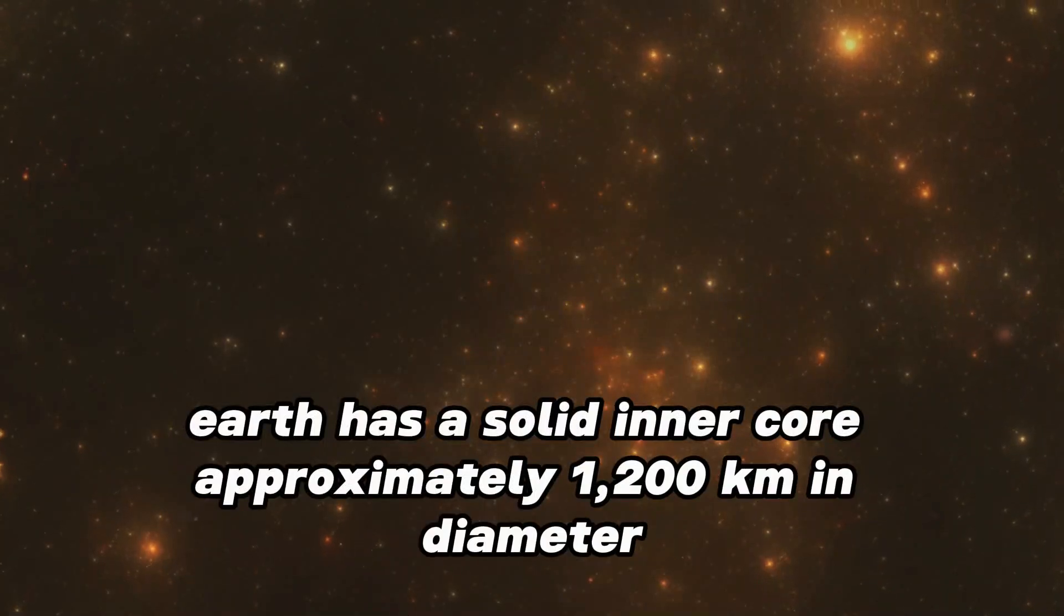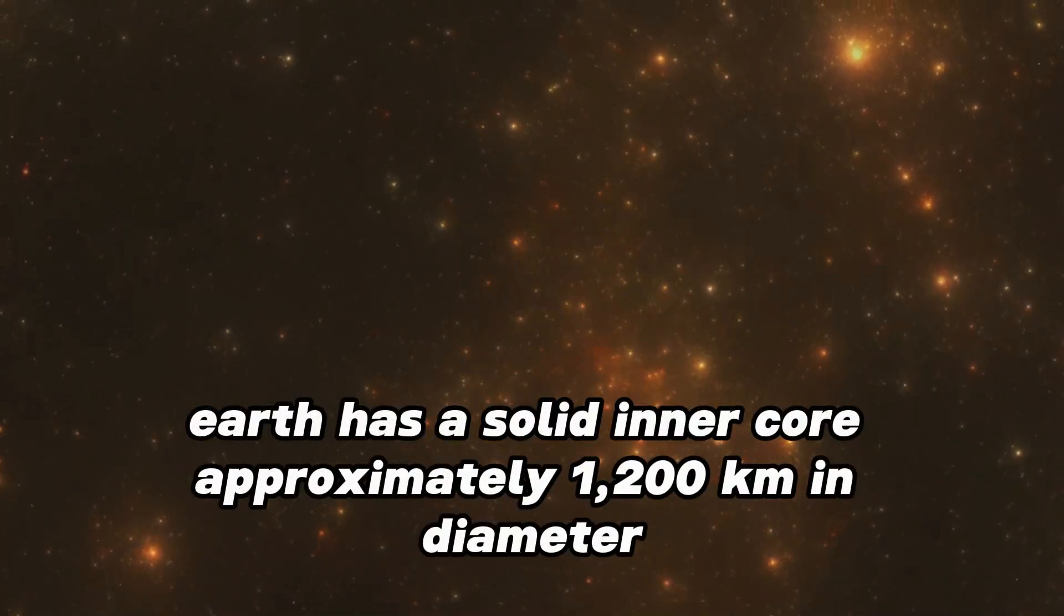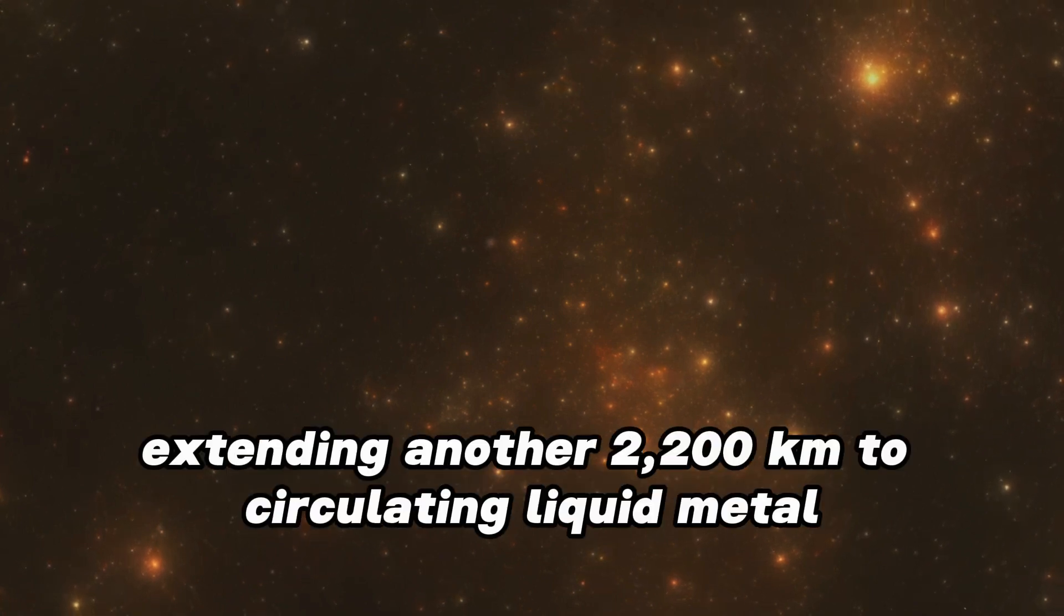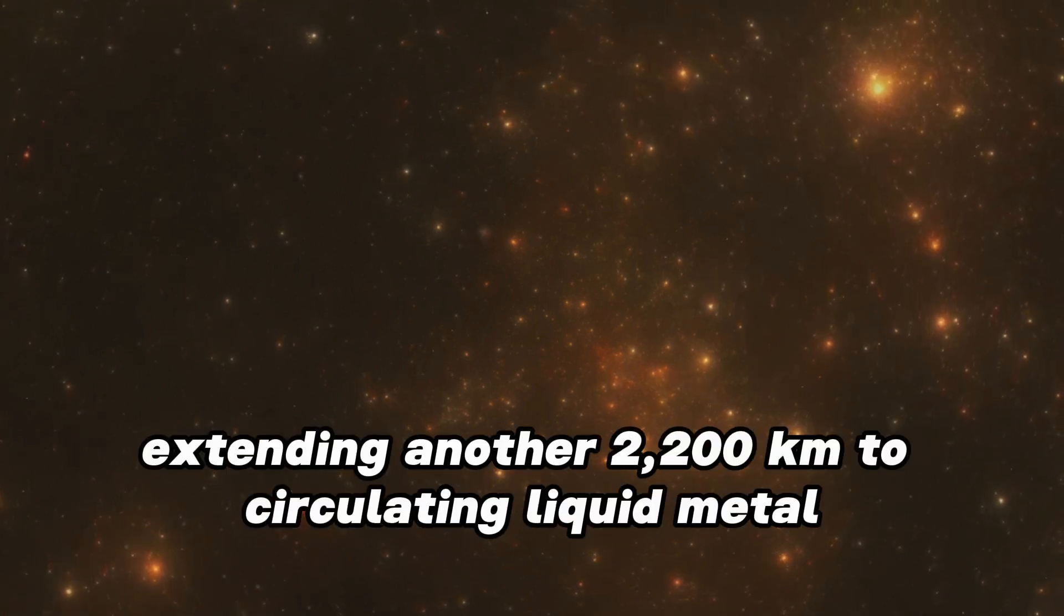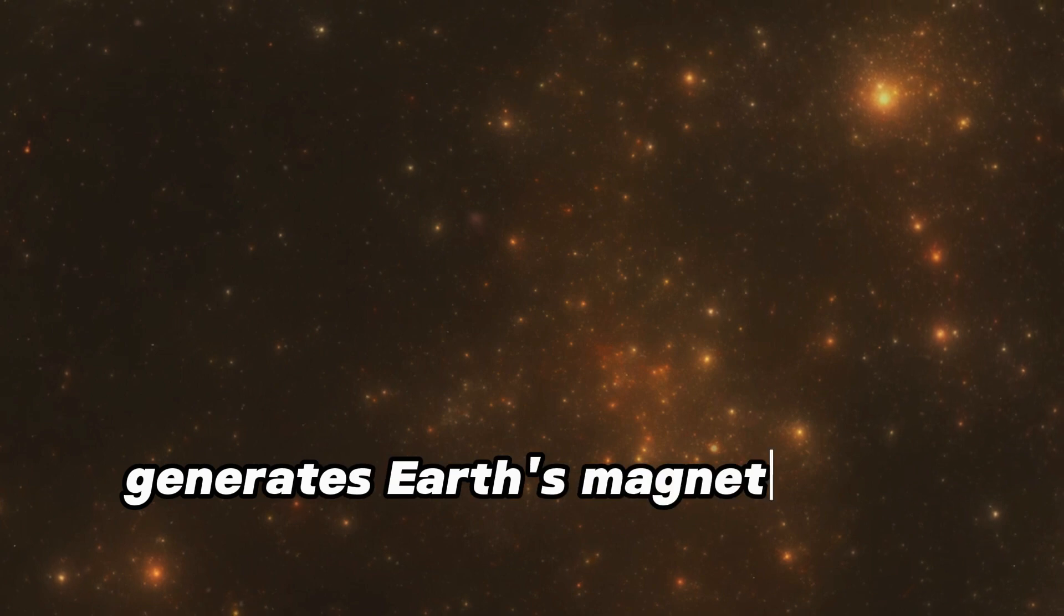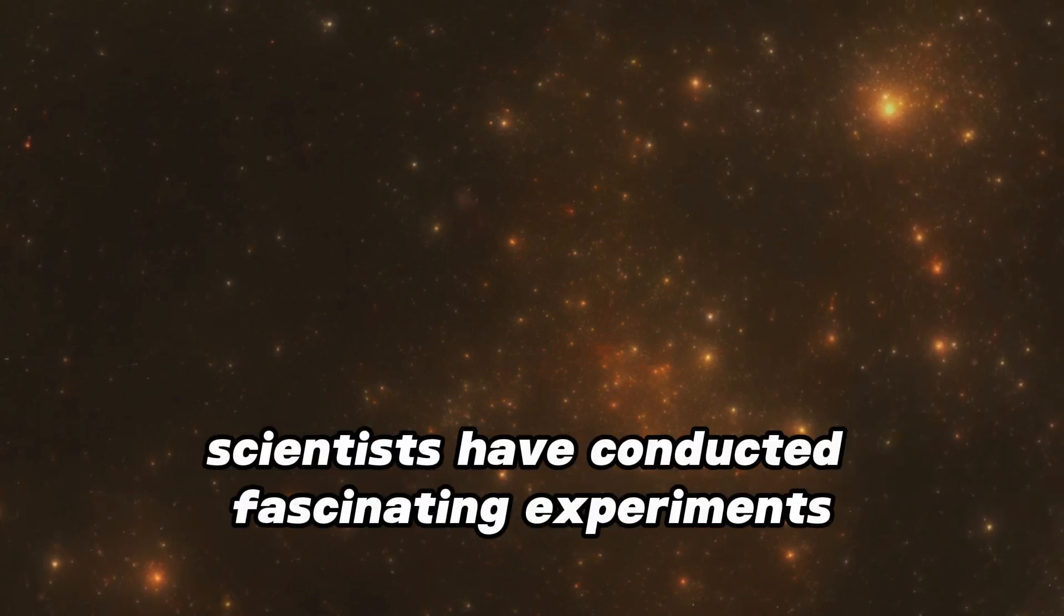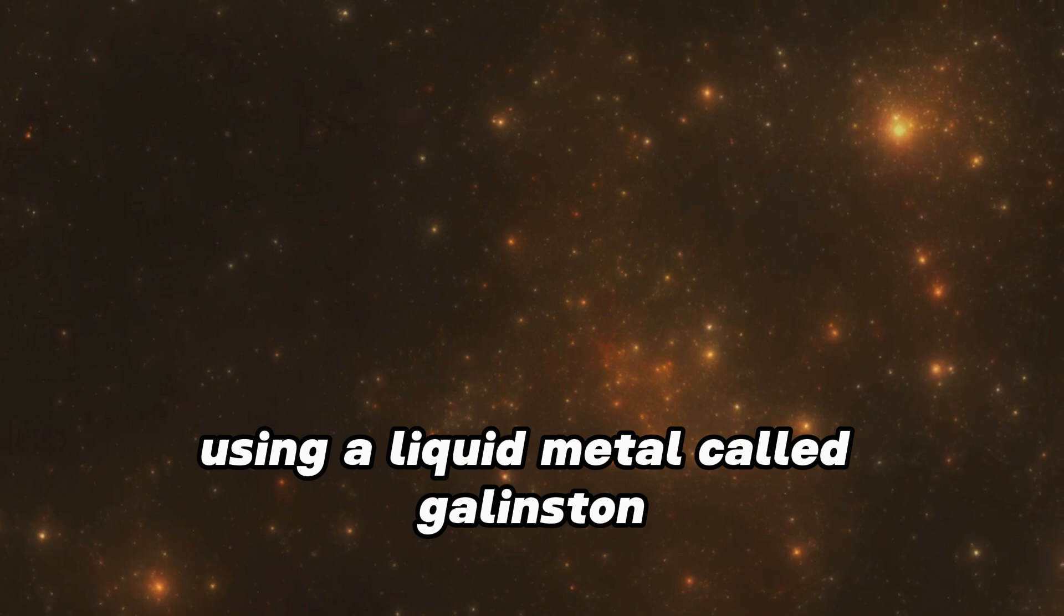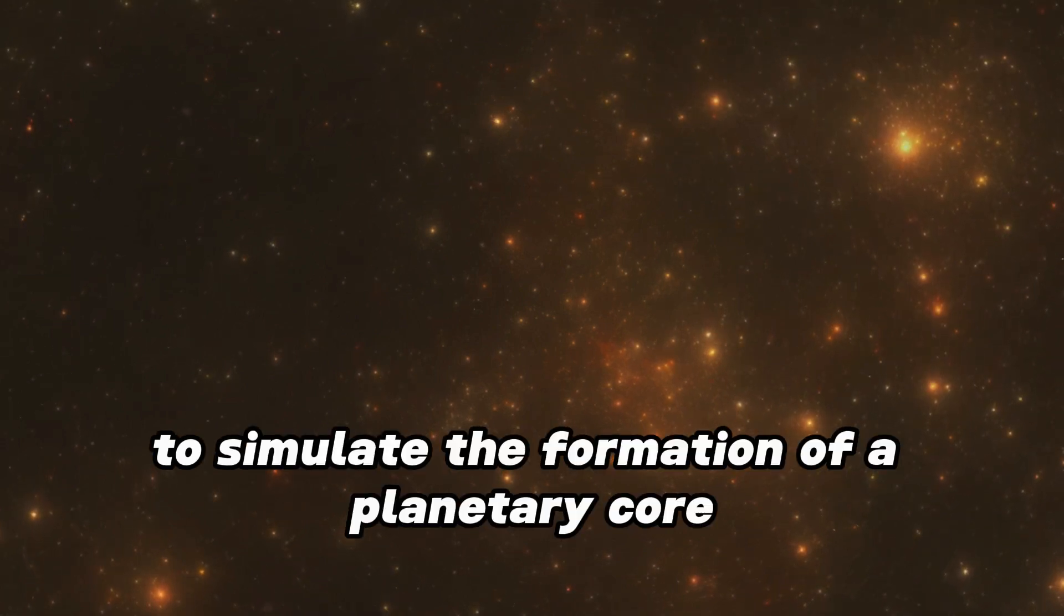Earth has a solid inner core approximately 1,000 to 100 kilometres in diameter, surrounded by a liquid outer core of molten iron extending another 2,000 to 100 kilometres. This circulating liquid metal generates Earth's magnetic field. Scientists have conducted fascinating experiments using a liquid metal called Galinstan to simulate the formation of a planetary core.